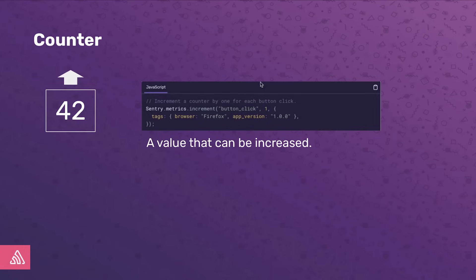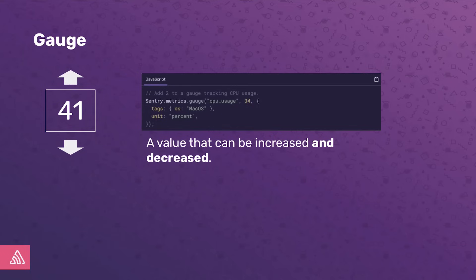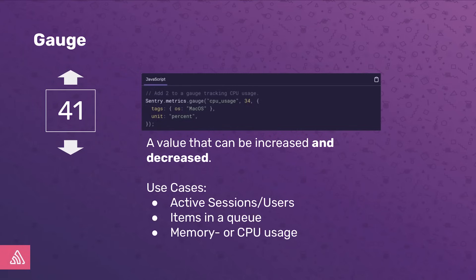We saw counters before — they represent a value that can only be increased and are used to count things. Like in our example where we counted the number of users per funnel step. We could also count the number of checkouts, button clicks, cache hits or misses. Similar to counters are gauges. The only difference is that they can also be decreased, making them an ideal fit for metrics like active sessions or users, the number of items in a queue, or process metrics like memory or CPU usage.